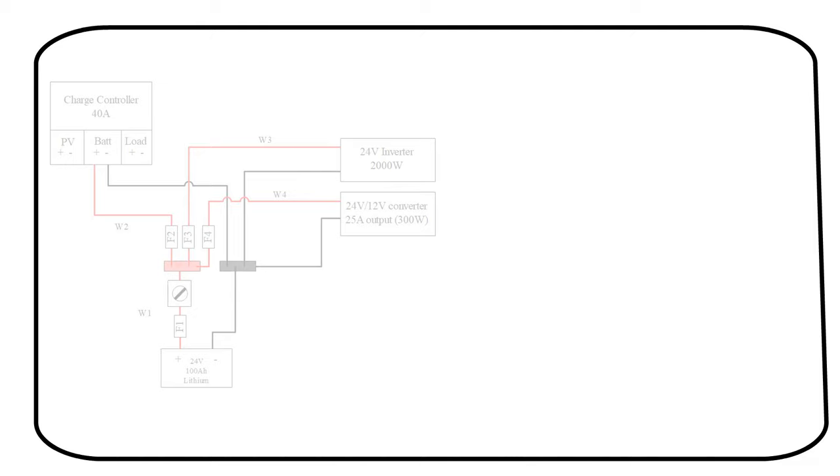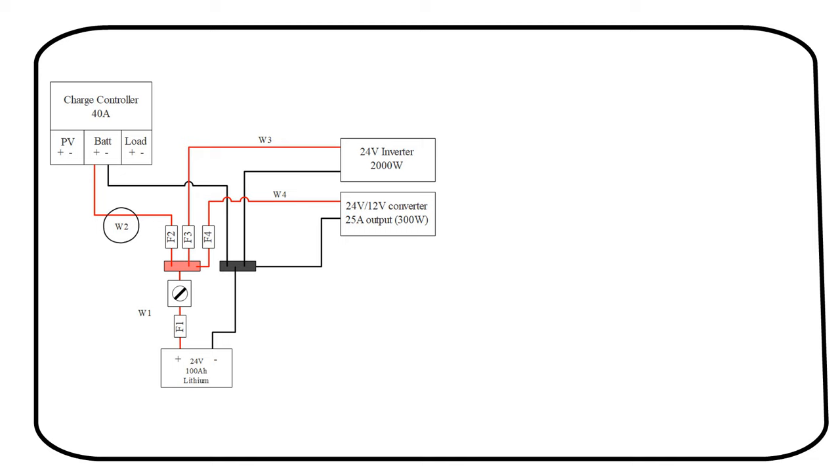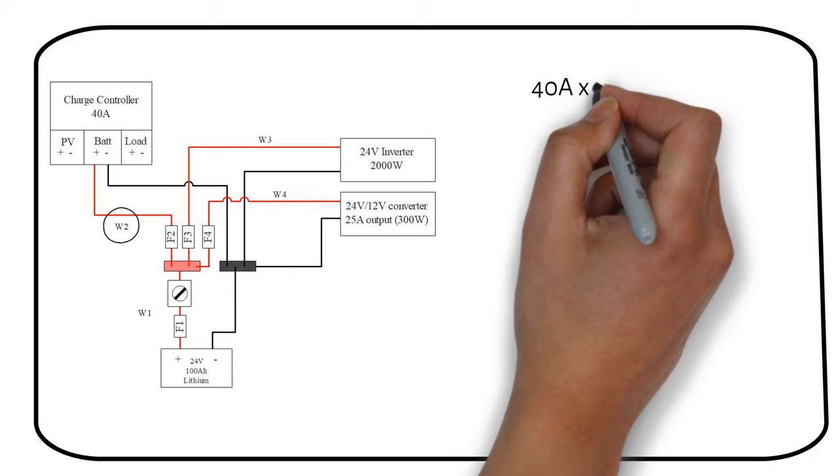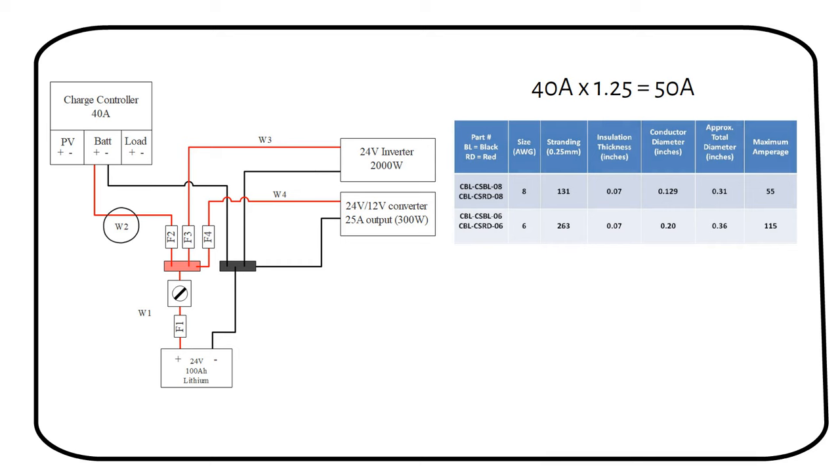Next we calculate the wire from the 40 amp charge controller to the battery. The maximum current the charge controller can deliver is 40 amps. We multiply this by a safety factor of 125% to become 50 amps. We need a wire that can carry 50 amps. This is an 8 gauge wire.